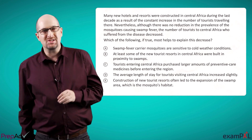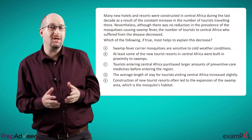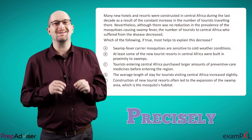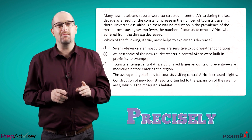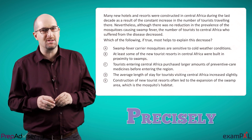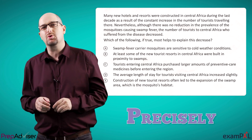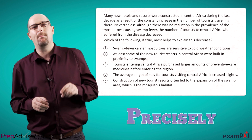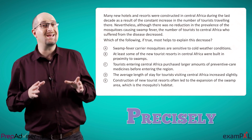In this question, the passage gives us enough information so we can answer the question precisely. If changes in the number of mosquitoes were not the cause of the decrease in the number of tourists suffering from swamp fever, it must be the tourists themselves who are better protected against the disease — which is exactly what answer choice C tells us.